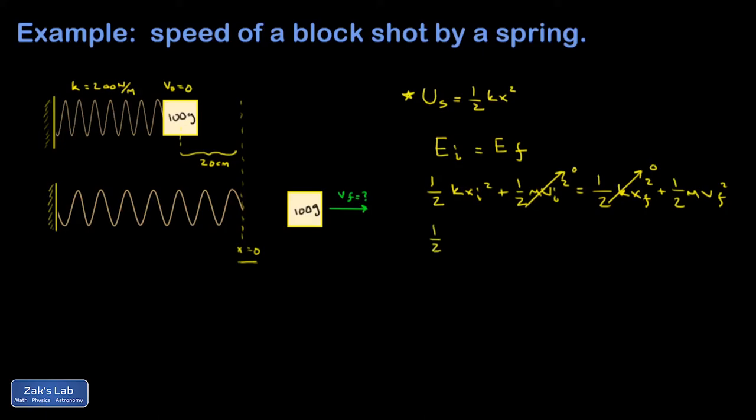So I can write down one-half k x initial squared equals one-half m v final squared. And again, it's okay if you just want to start by writing that down.